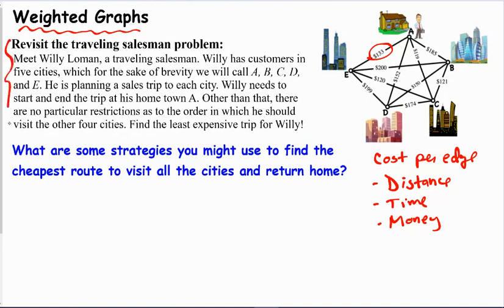So we're revisiting a problem that we saw earlier on a practice worksheet. It says, meet Willie Loman, a traveling salesman. Willie has customers in five cities, which for the sake of brevity, we will call A, B, C, D, and E. He is planning a sales trip to each city. Willie needs to start and end the trip at his hometown of town A. Other than that, there are no particular restrictions as to the order in which he should visit the other four cities, and our goal is to find the least expensive trip for Willie.